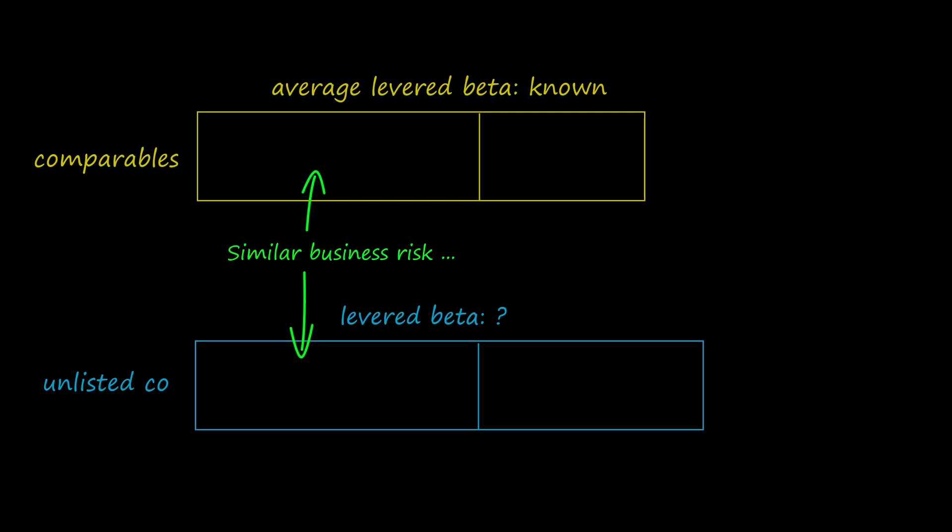However, the comparables and the unlisted company are unlikely to have the same financial risk because of the wide range of different possible capital structures.